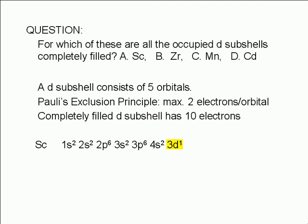Therefore, the 3d subshell is not completely filled. For zirconium, this is the electron configuration. Two d subshells are occupied, the 3d and the 4d. The 3d subshell is completely filled with ten electrons, but the 4d subshell only has two electrons.